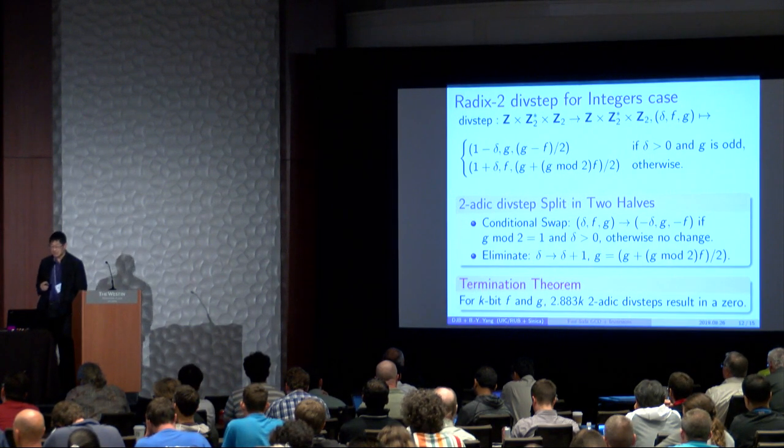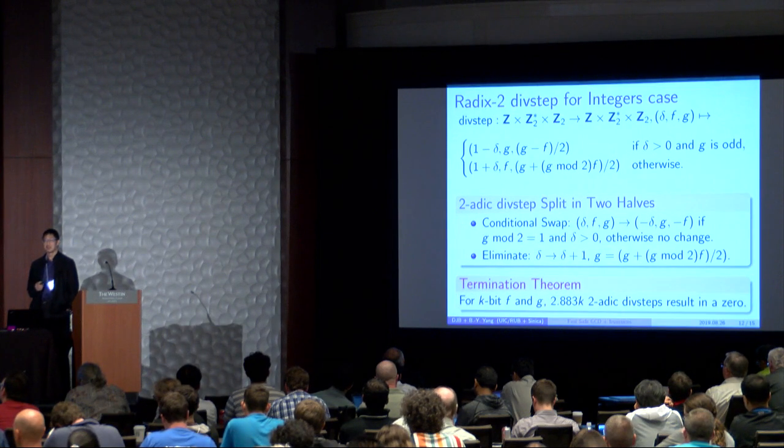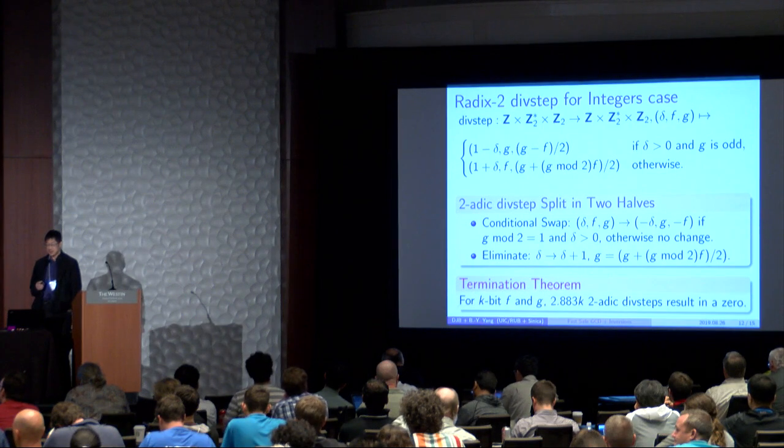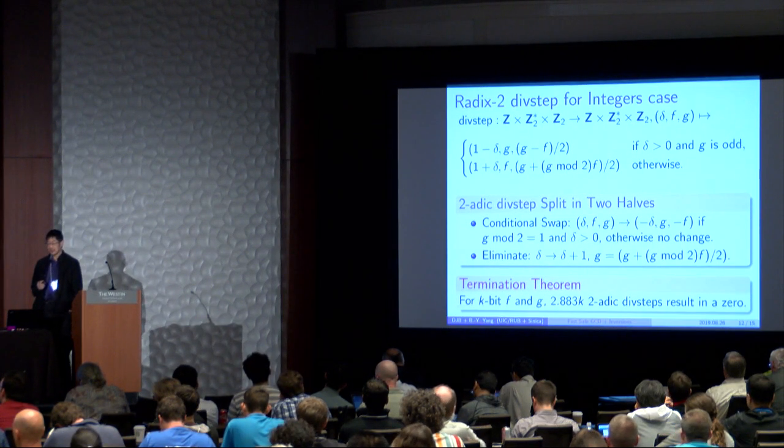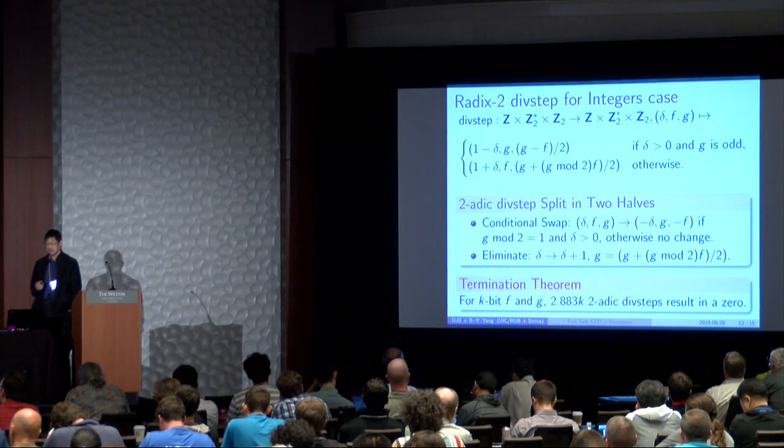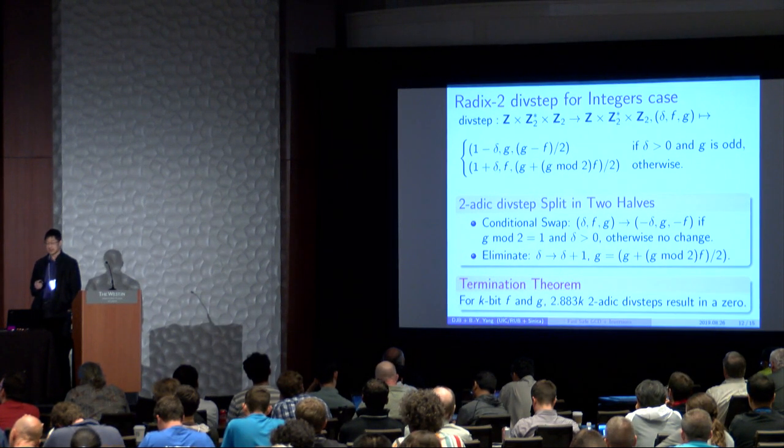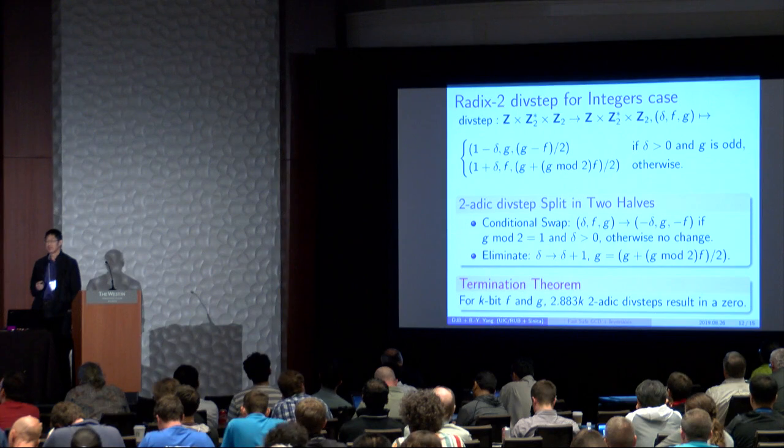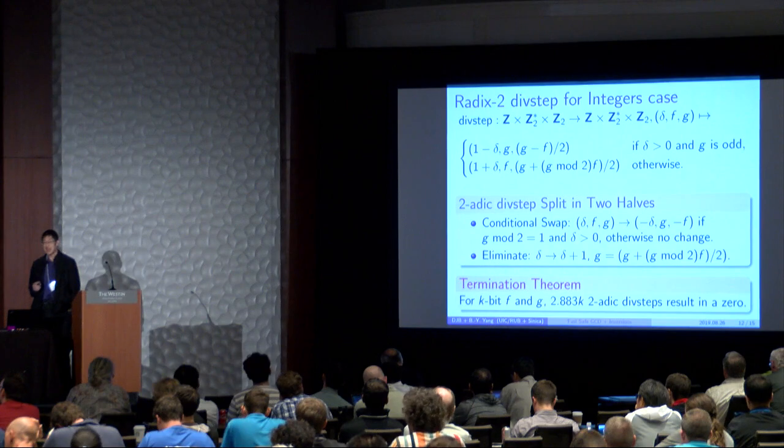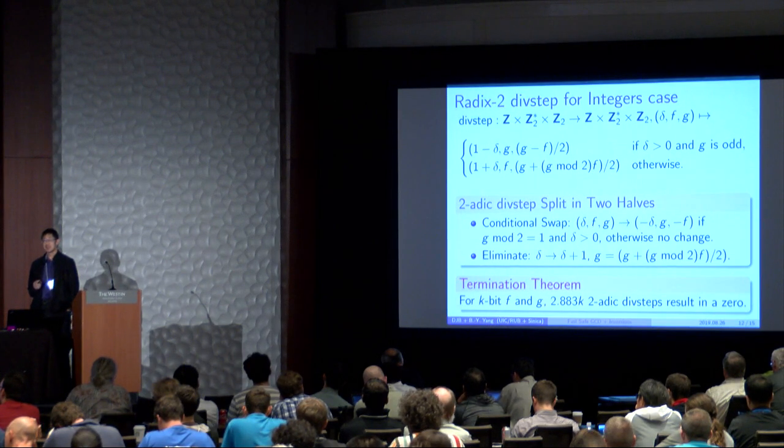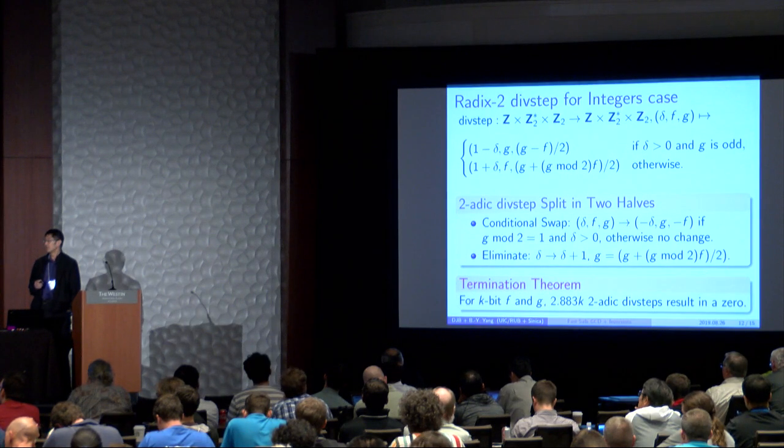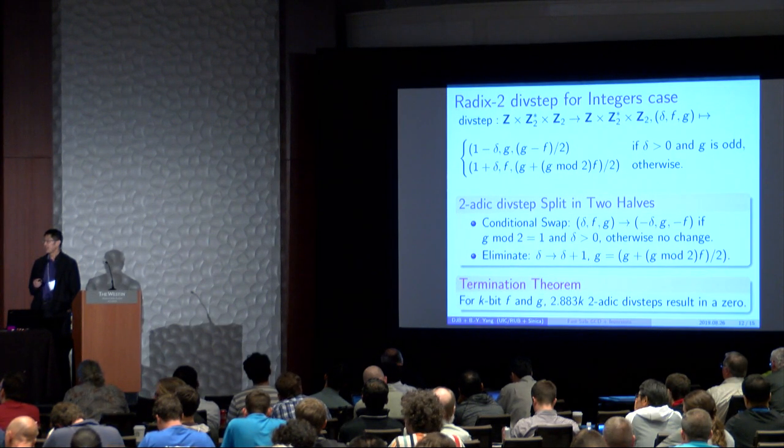And we can also, again, split this two-adic divstep in two halves. First, there's a conditional swap. So delta F G gets mapped to minus delta G and minus F if G is odd and the delta is greater than zero. Notice that F is negated here. If we do not negate F here, the result may not terminate.